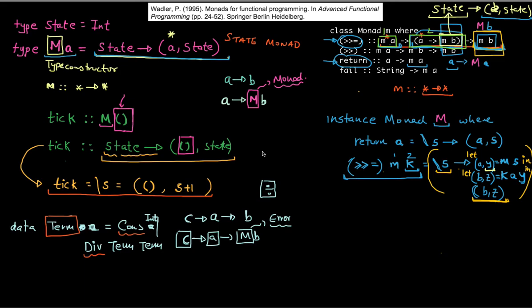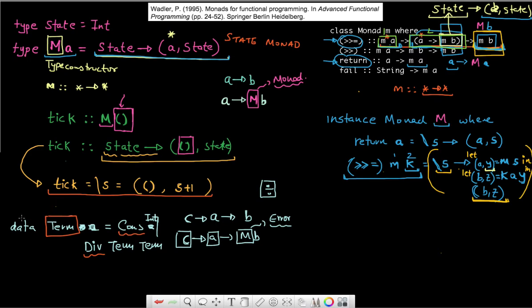In this video, we're going to finally wrap up our state monad by actually working with a simple example. The simple example is the term type we defined earlier — an algebraic data type with two value constructors: Cons of n, and Div of term and term.